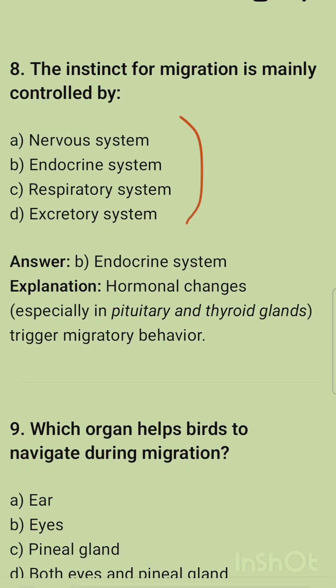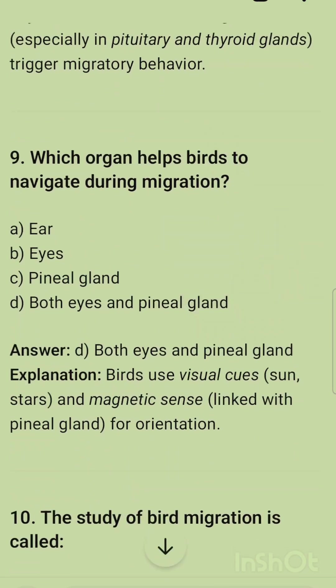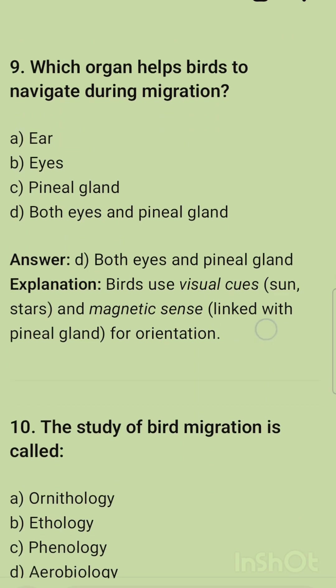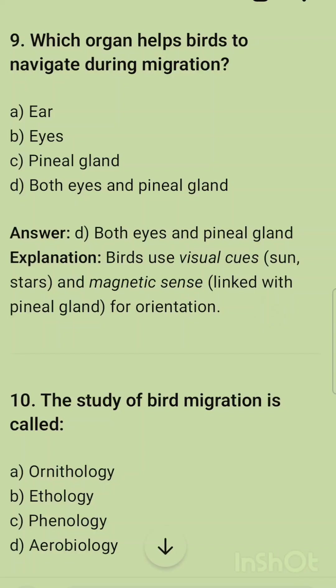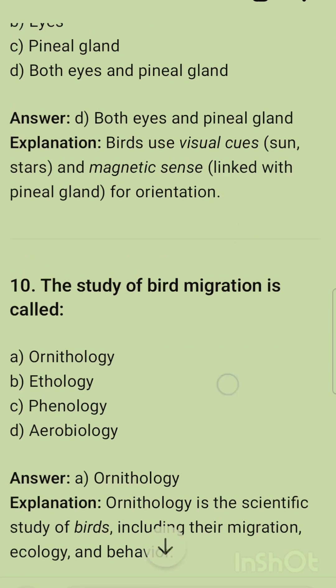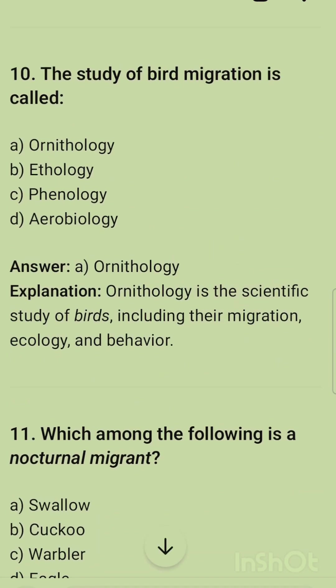The instinct to trigger migration is mainly controlled by — options are nervous system, endocrine system, respiratory system, and excretory system. The correct option is the endocrine system — hormonal changes controlled by the pituitary and thyroid glands regulate migratory movement. The next question: which organ helps birds navigate during migration? The correct option is both eyes and pineal gland, as birds use visual cues, sun signals, and magnetic senses linked with the pineal gland.